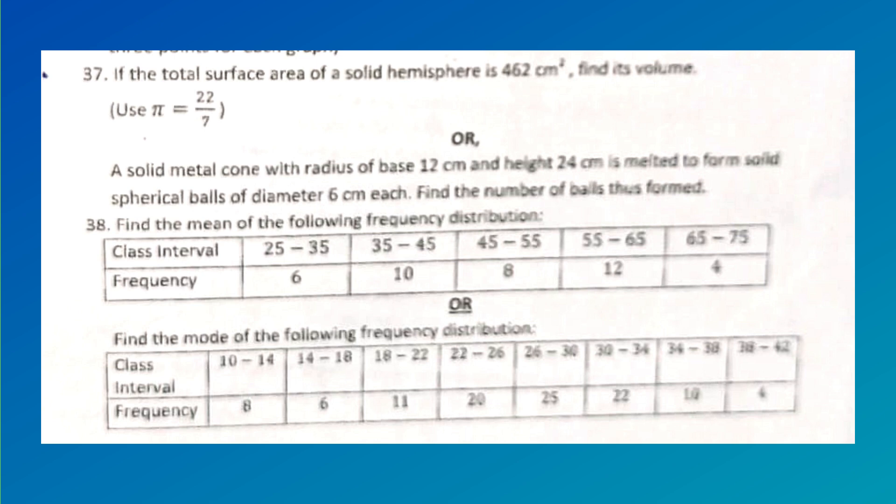Find the mean of the following frequency distribution: class intervals 25-35 (frequency 6), 35-45 (frequency 10), 45-55 (frequency 8), 55-65 (frequency 12), 65-75 (frequency 4). Or find the mode of the following frequency distribution: class intervals 10-14 (frequency 8), 14-18 (frequency 6), 18-22 (frequency 11), 22-26 (frequency 20), 26-30 (frequency 12), 30-34 (frequency 4).